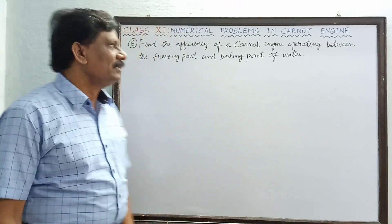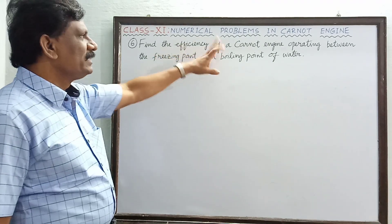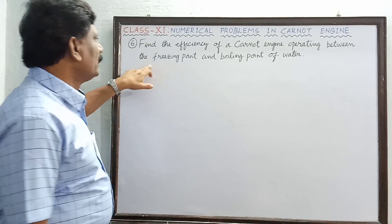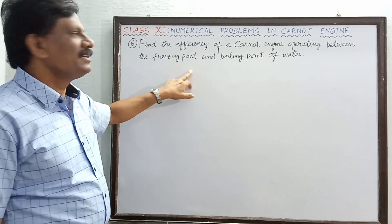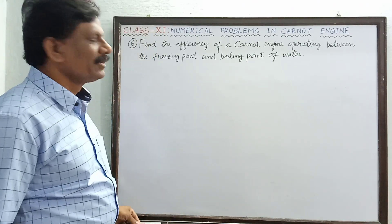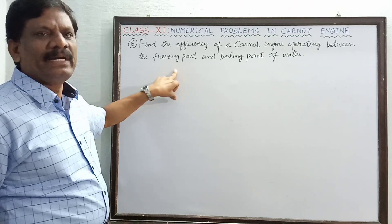Hi students, problem number six: find the efficiency of a Carnot engine operating between the freezing point and the boiling point of water. It's a very interesting question but very simple one. We should know the freezing point of water and the boiling point of water.